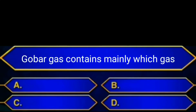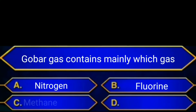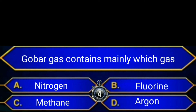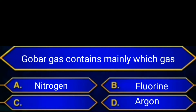Gobar gas contains mainly which gas? A. Nitrogen, B. Fluorine, C. Methane, D. Argon. Answer is option C: Methane.